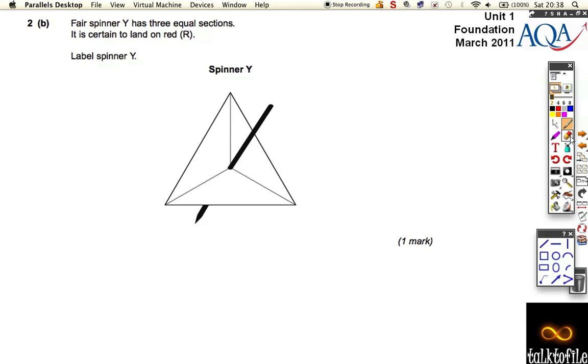Moving on to part B. First spinner Y has 3 equal sections. It's certain to land on red. So it's guaranteed 100% certain to land on red. Well, if we have to label it, all the sections must be red. If it's going to land on red, guaranteed it must all be red. Nice easy mark.